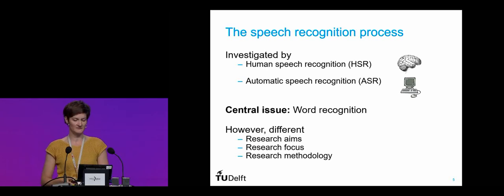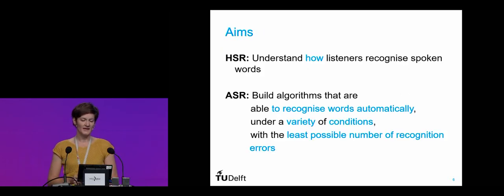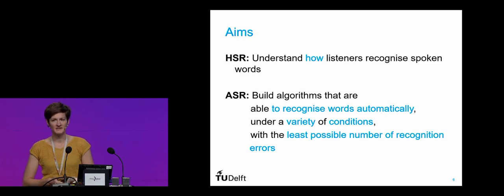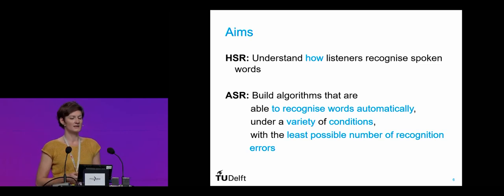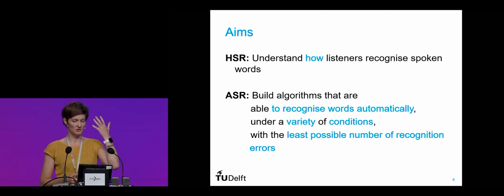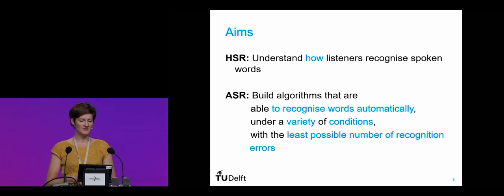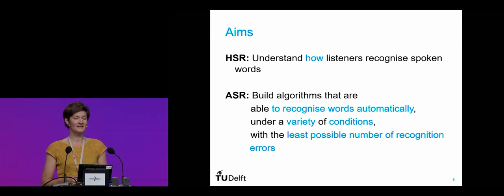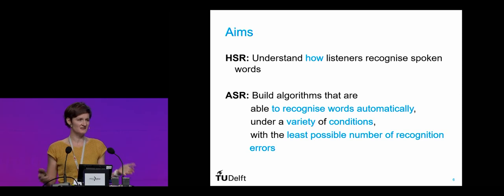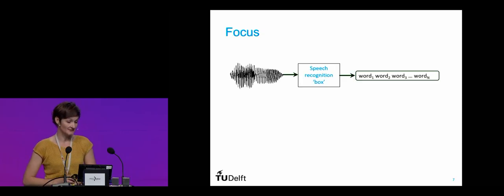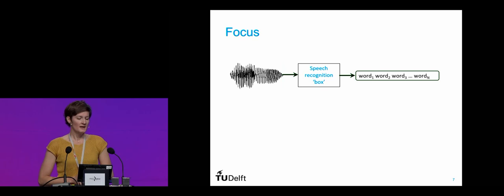The aim in psycholinguistics or human speech processing is to understand how listeners recognize spoken words — how we process speech in the human brain. In automatic speech recognition, the aim is to build algorithms that recognize words automatically under a variety of conditions with the least possible number of recognition errors. These are two vastly different aims.